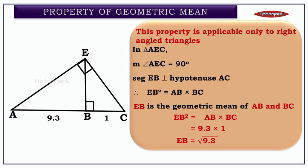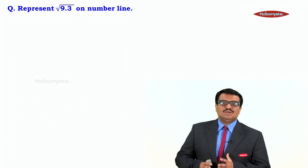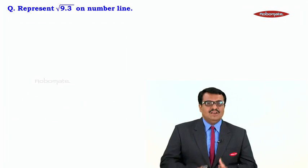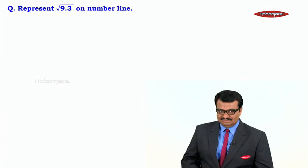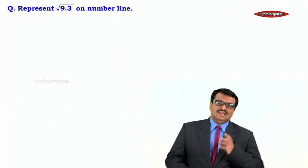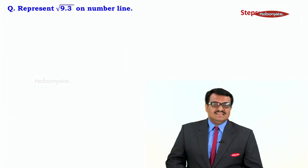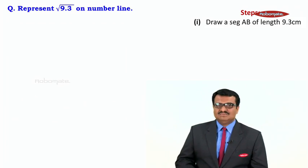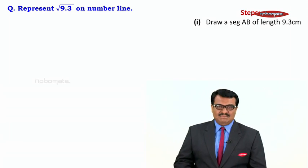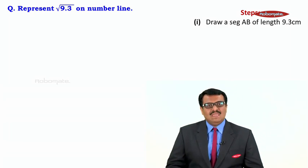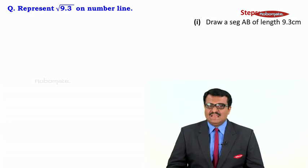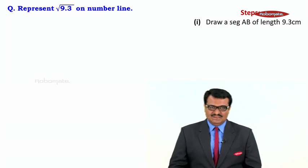We are going to apply this concept of geometric mean — EB² = AB × BC — in the next sum. The next sum is: represent √9.3 on the number line. The first step is to draw AB of length 9.3 centimeters.